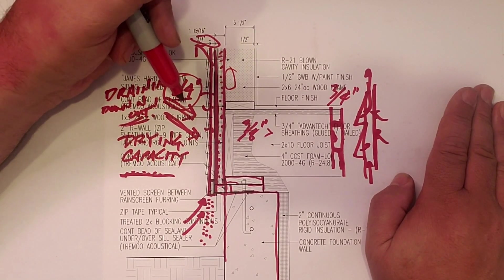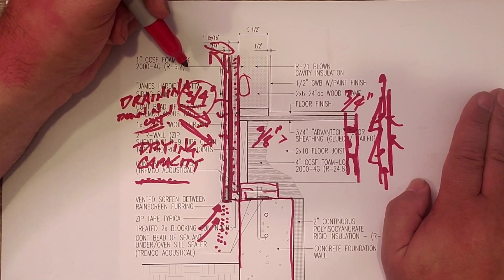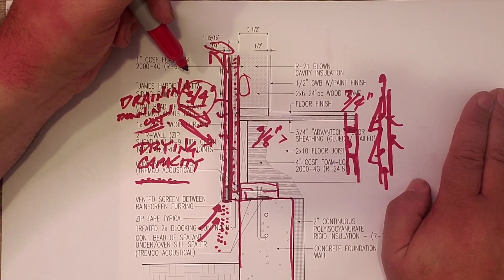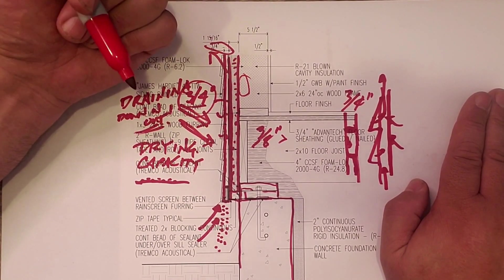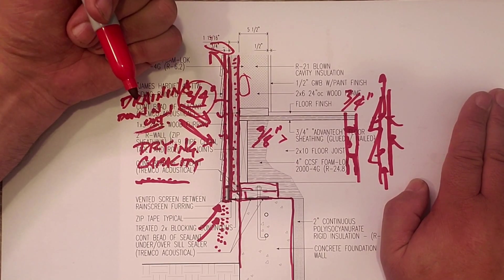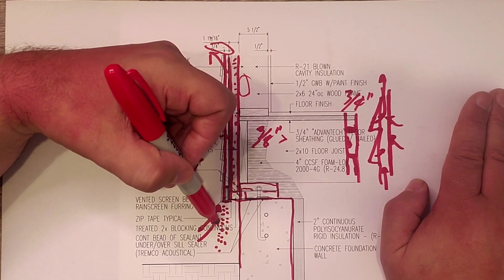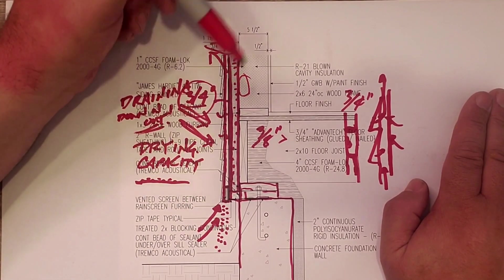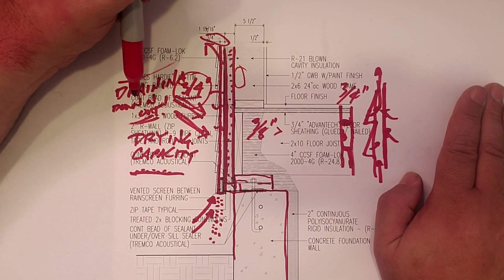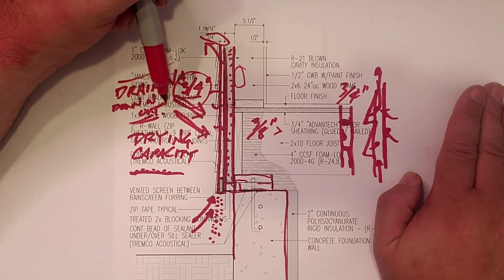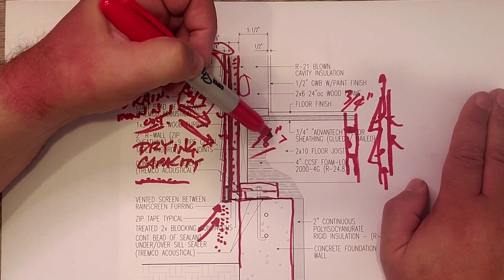That's the other half of vented rain screens that people fail to talk about. There are some people out there that I respect very much who have talked about how the drying capacity of that space is probably equal to or potentially even more important than the draining capacity. I'll leave you with that thought. Keep it greater than three-eighths of an inch. We shoot for three-quarters usually.